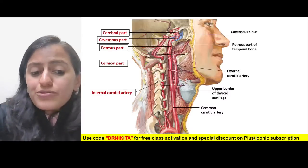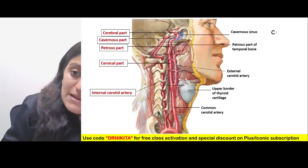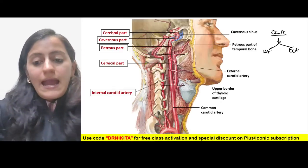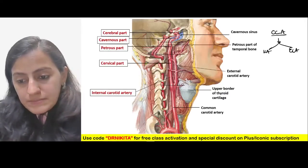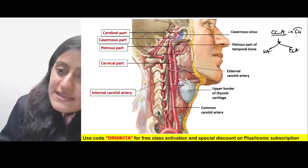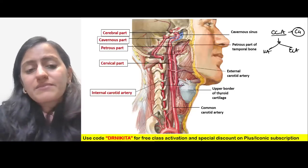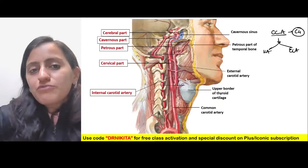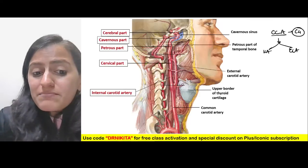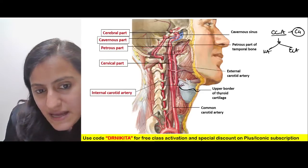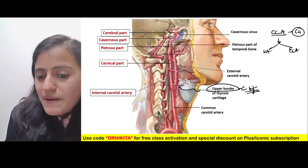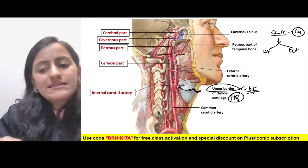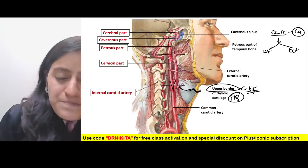Now, how do we identify ICA in an image? The common carotid artery bifurcates into ICA and ECA at the C4 vertebral level. Remember: major bifurcations — carotid at C4, trachea at T4, aorta at L4. The bifurcation occurs at the upper border of the thyroid cartilage, a point previously asked in exams.